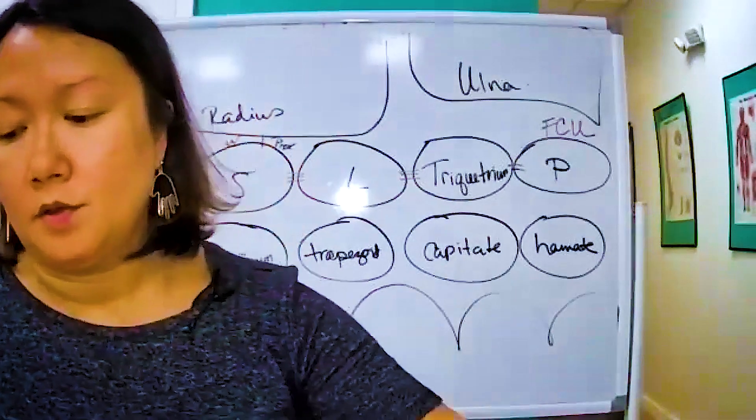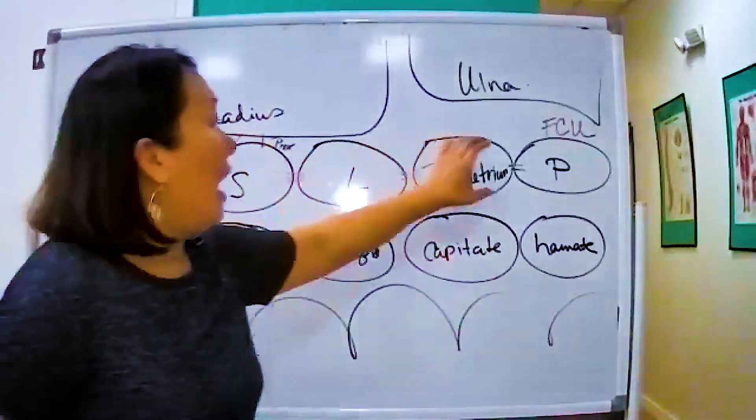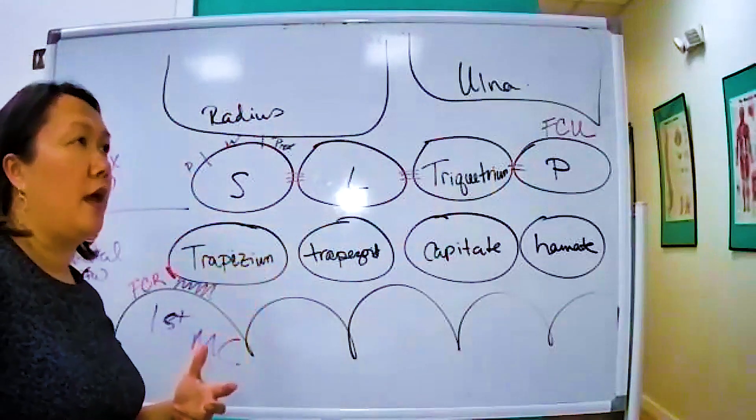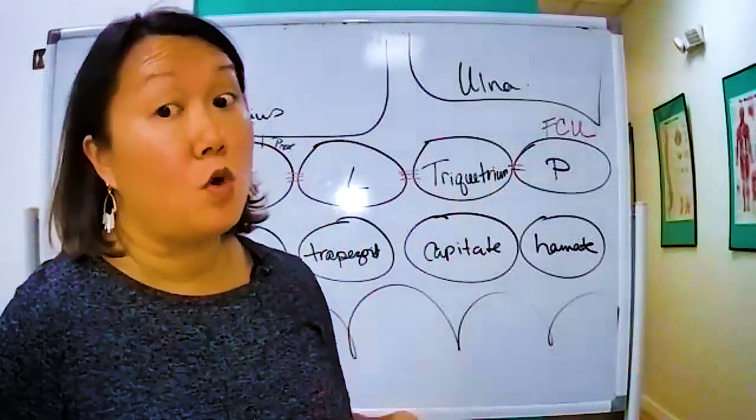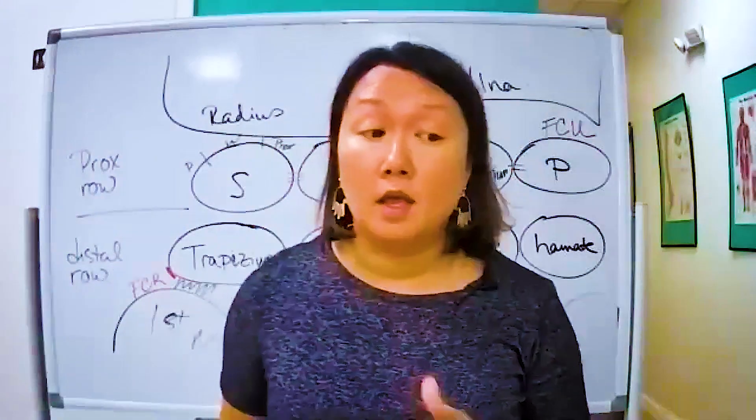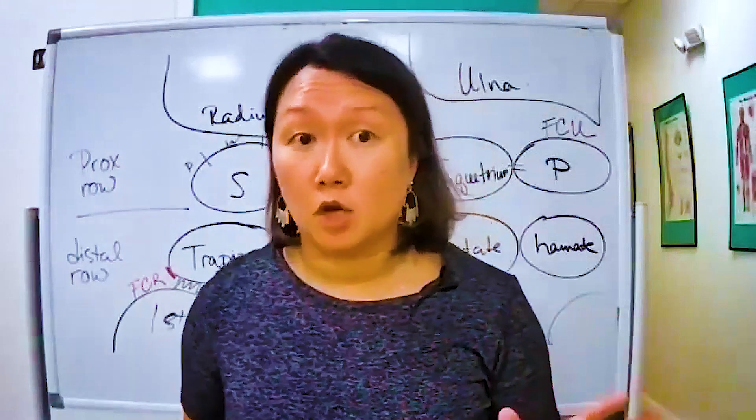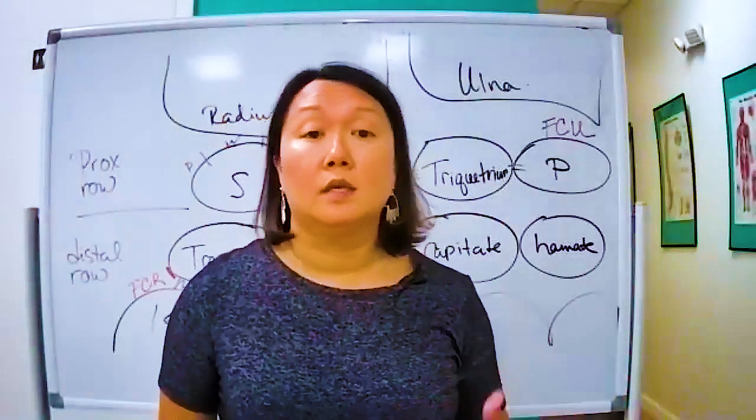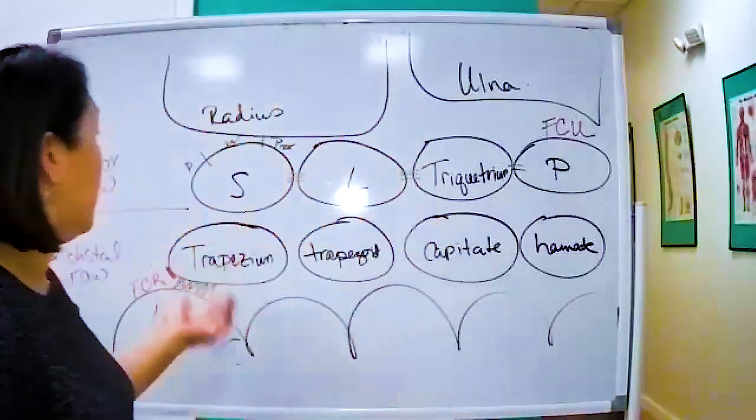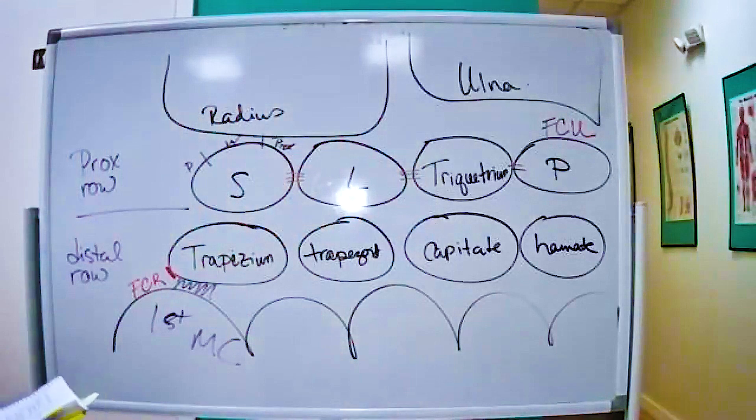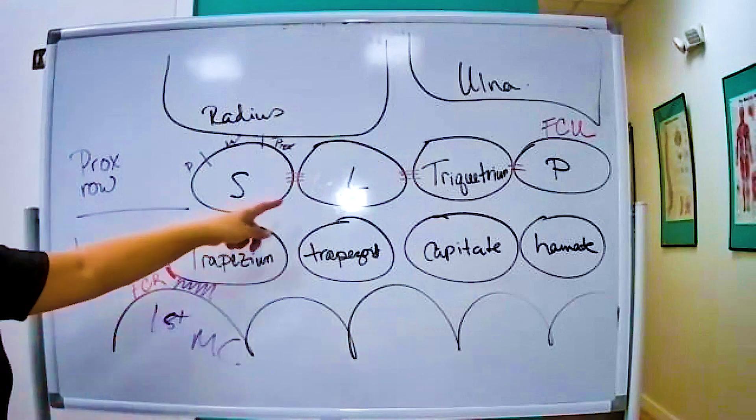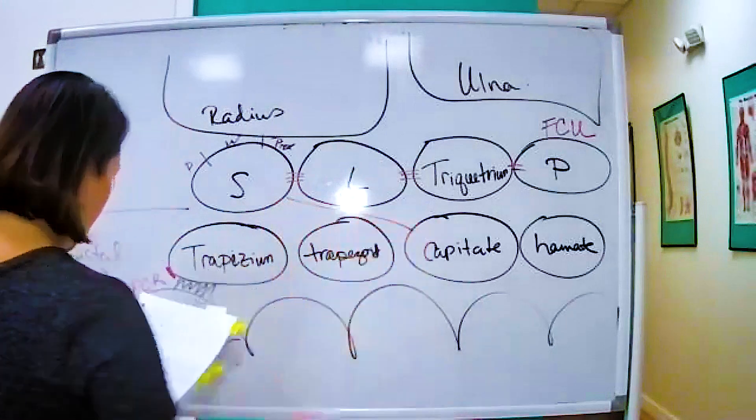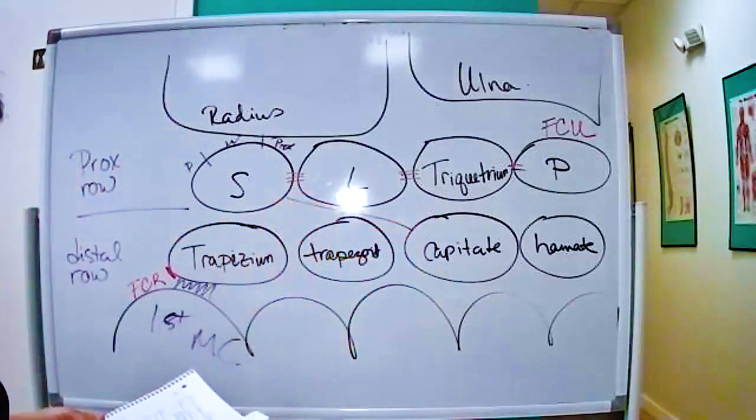So that's within this row, and the proximal row is the row that tends to have the most problems. The scaphoid essentially is a problem child here. When we talked about the hands, the PIP was a problem child, was always something wrong with it. And the wrist, it's a scaphoid. So the scaphoid articulates with the lunate and it actually articulates with the capitate as well. I'm not drawing it to scale, but it articulates because of how big this bone is.